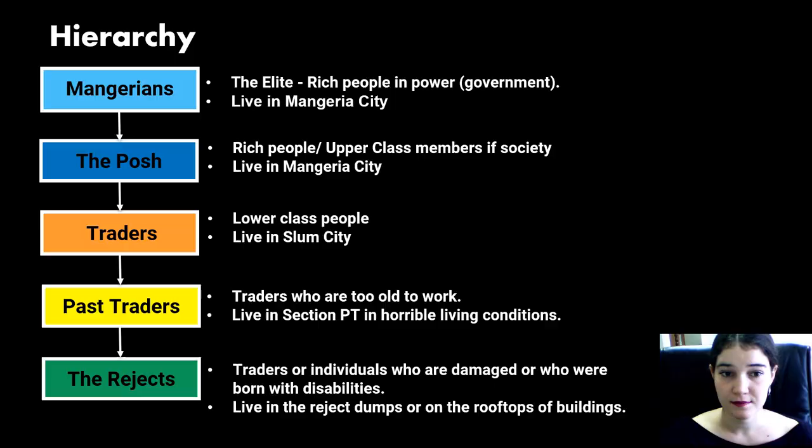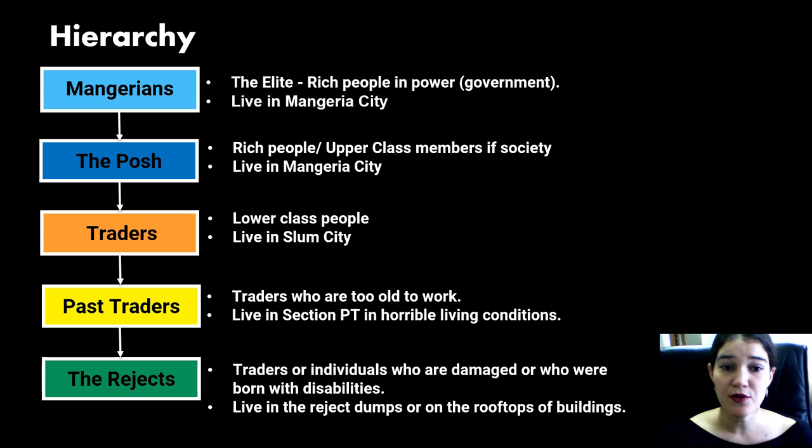In the novel, we see a certain hierarchy in place. At the top are the Mangareans. They are the elite, rich people in power. They form the government, and the Mangareans live in a place called Mangaria City. Below the Mangareans are the posh, rich people — the upper class members of society. They also live in Mangaria City.